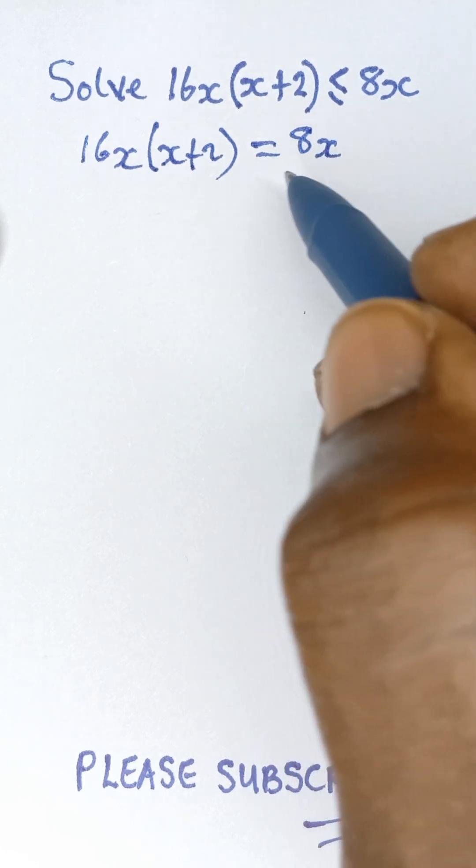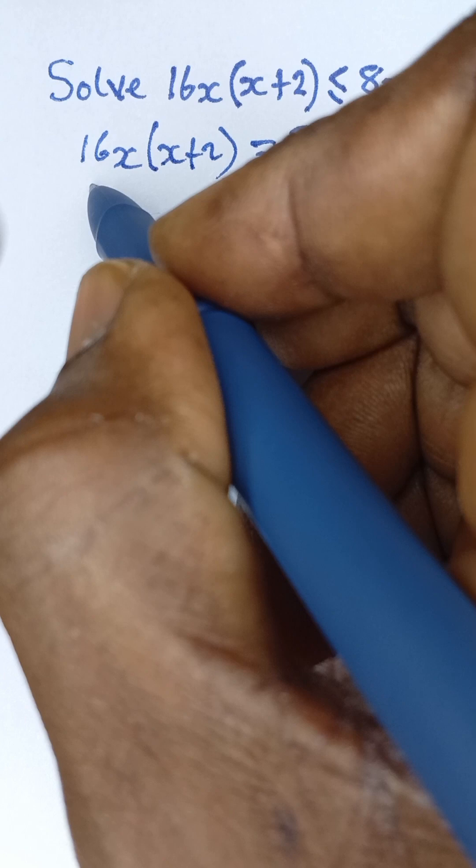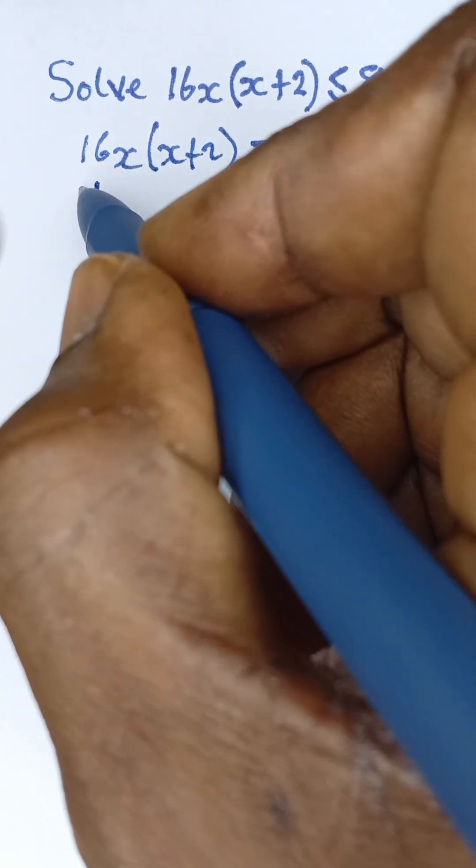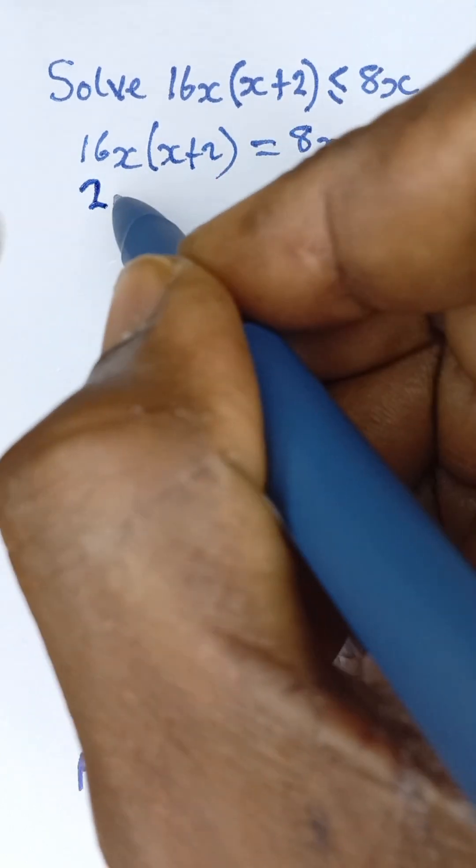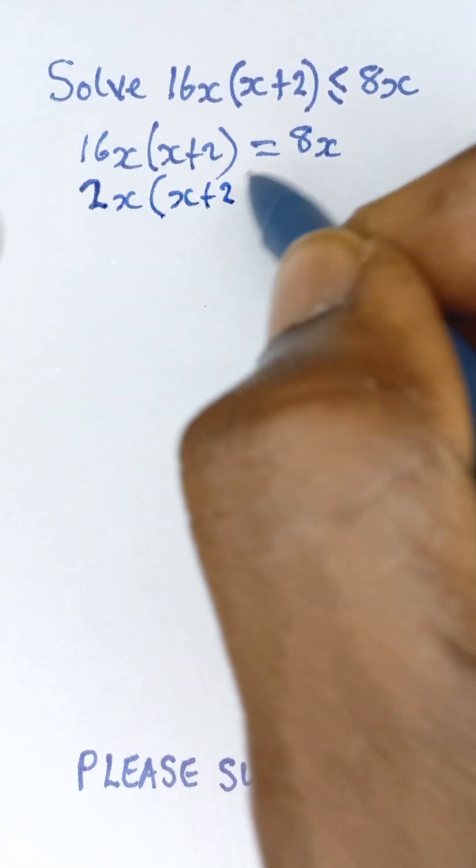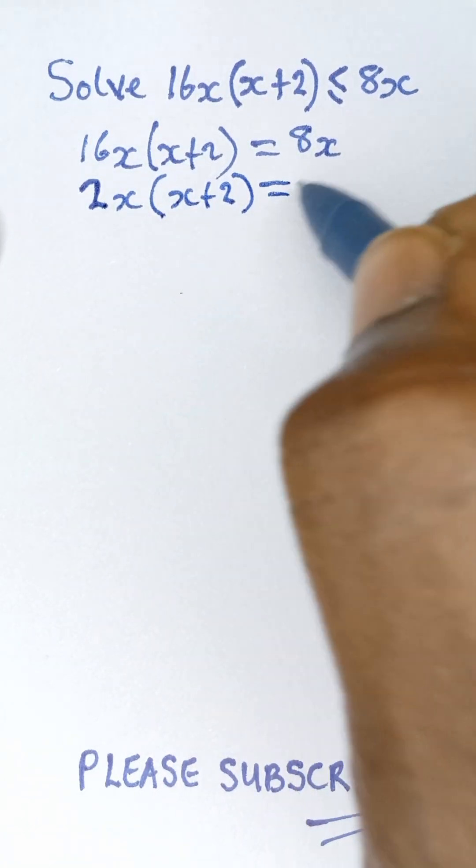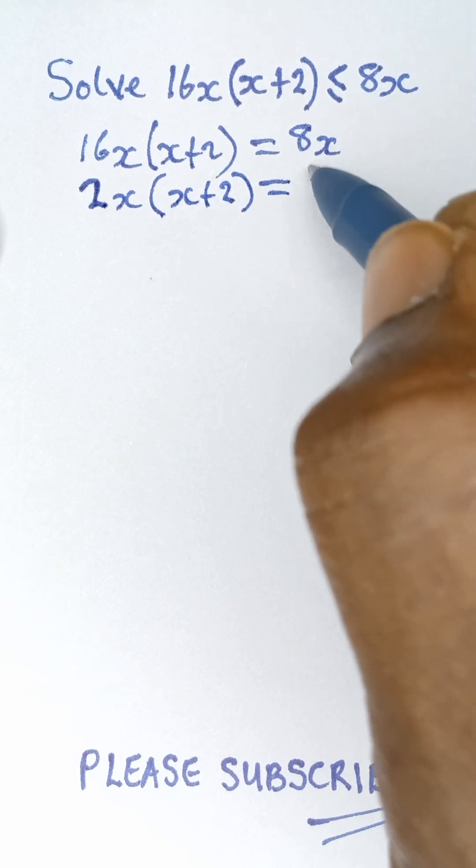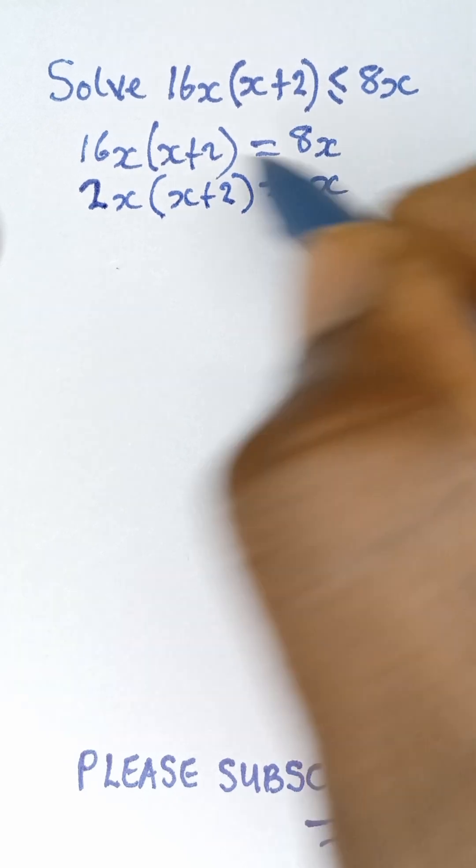That will give us 2x(x+2) = x after both sides have been divided by 8. So 8 will cancel 8 and then 16 divided by 8 will give us the 2 that we have here.